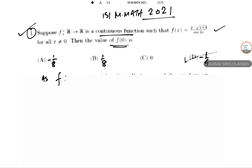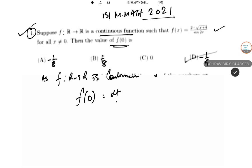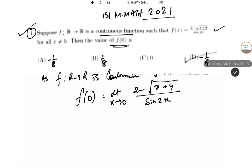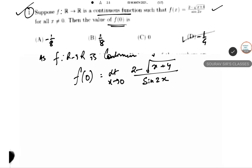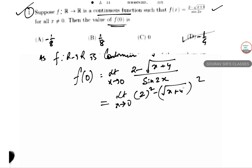Since f is continuous, f(0) has a limiting structure we can apply easily. So applying the limit: 2 minus root over (x+4) divided by sine 2x. In the next line, we can rationalize this expression.